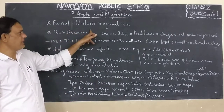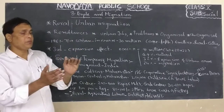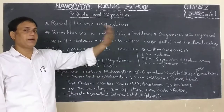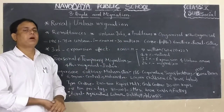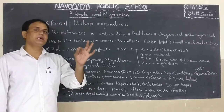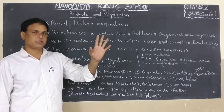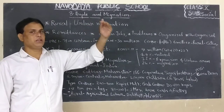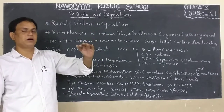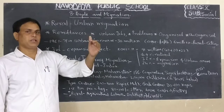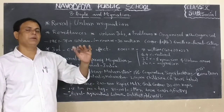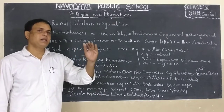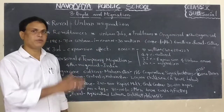Now, rural to urban migration. People are migrating from rural to urban areas. The main reasons for male migration are job opportunities, higher education, and better income. For female migration, the main cause is marriage.